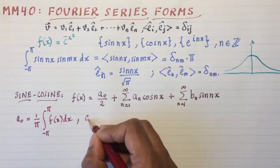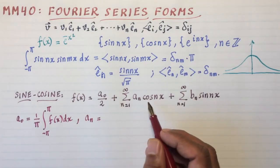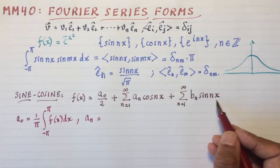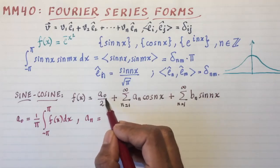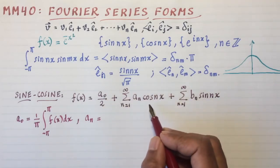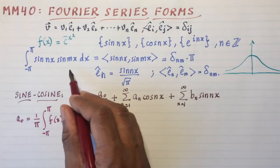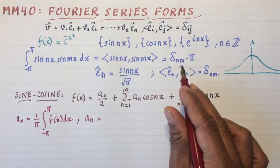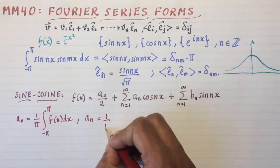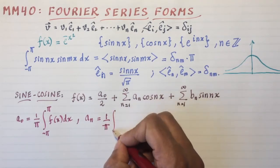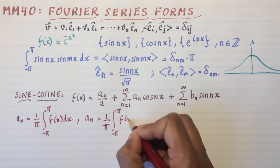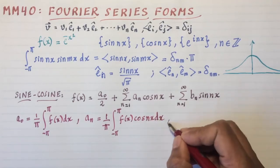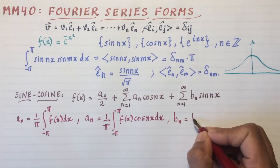And then, a_n can be got by multiplying this whole thing with cosine. Then sine and cosine will not interact well, they'll give you always zero. Cosine by itself again will give you zero. And cosine and cosine have a chance of interacting, because cosine and cosine just like sine and sine gives you δ_nm times π. So this gives me 1/π times the integral from -π to π of f(x) cos(nx) dx.